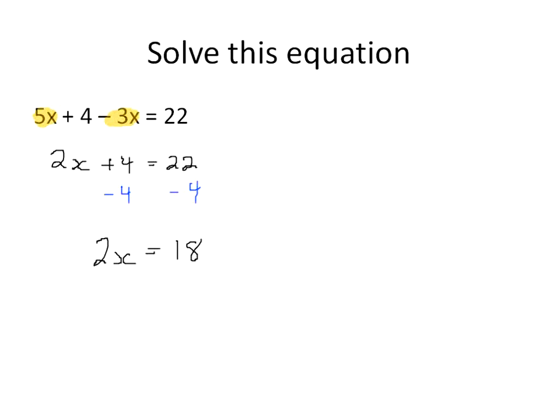And now I have 2 times x. So I'm going to do the opposite of multiplying times x, which means I'm going to divide by x. 2x divided by 2 leaves me with x. And 18 divided by 2 is 9. And that'll be my final answer. And you could take x, plug it in here, solve for the value of 9. 5 times 9 plus 4 minus 3 times 9 is equal to 22. And you should get that it is the correct equation.